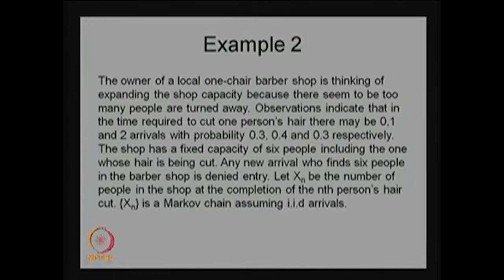Now I am going to define the random variable. Let Xn be the number of people in the shop at the completion of the nth person's haircut. This is a very different stochastic process — usually the parameter space is time, but here the parameter space is the number of people in the shop when the nth person leaves after the haircut. The random variable is how many people are in the system when the nth person leaves; you should not count that person. This number is counted at the departure time point, and the maximum will be 5 when he leaves.